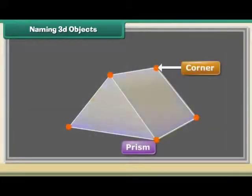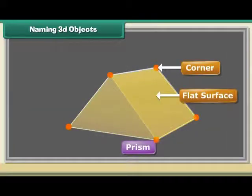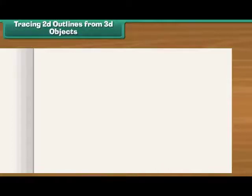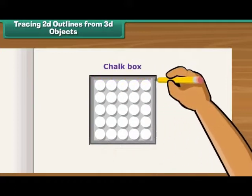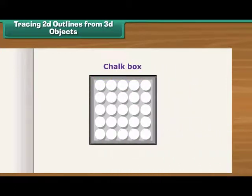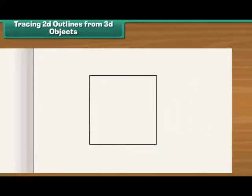Tracing 2D outlines from 3D objects. Let us learn to trace outlines of 3D on paper and see what we get. Place a chalk box on a sheet of paper. Draw lines along its outer edges. Remove the chalk box. You can see a square on the sheet.